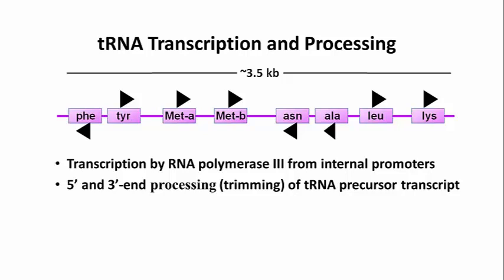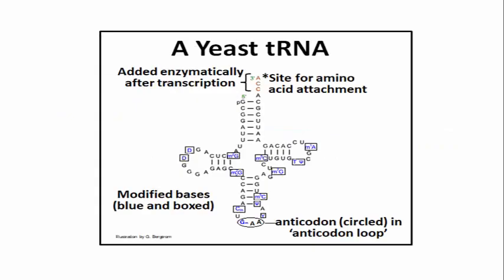Also, many bases within transfer RNAs are chemically modified, and a trinucleotide, CCA, is enzymatically added nucleotide by nucleotide to the 3' end of every transfer RNA molecule after transcription. The CCA trinucleotide at the 3' end serves as an amino acid attachment site.